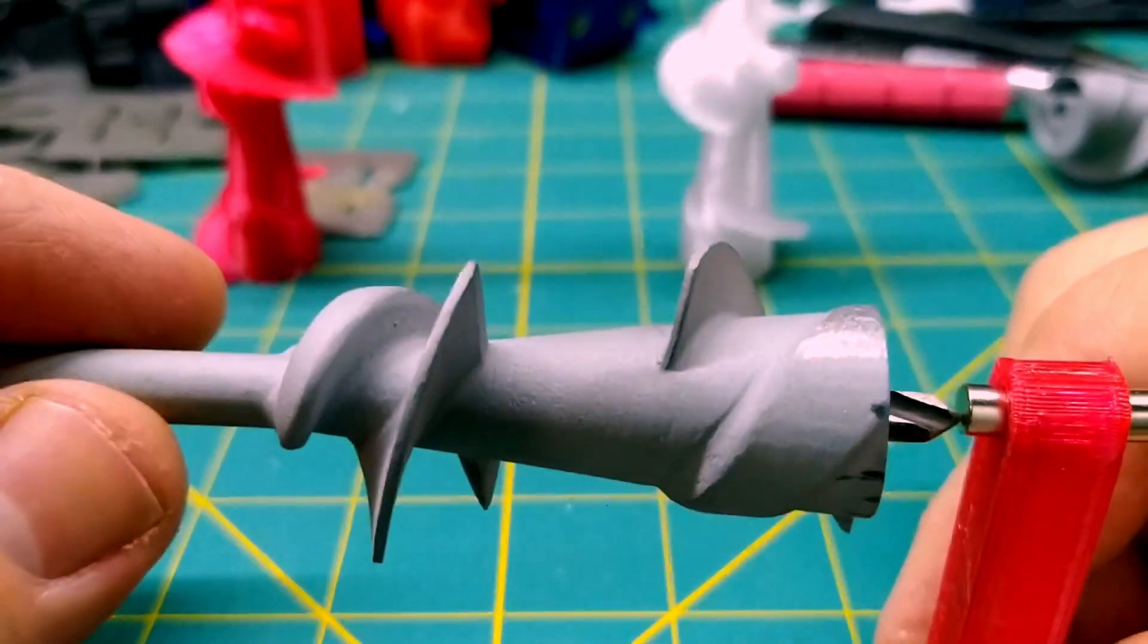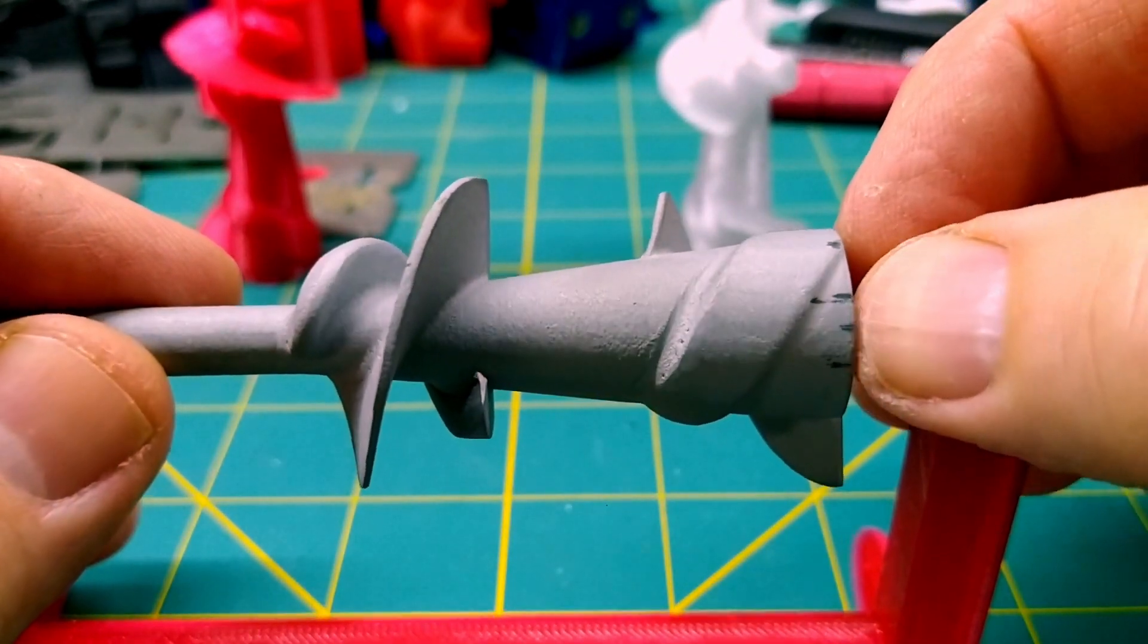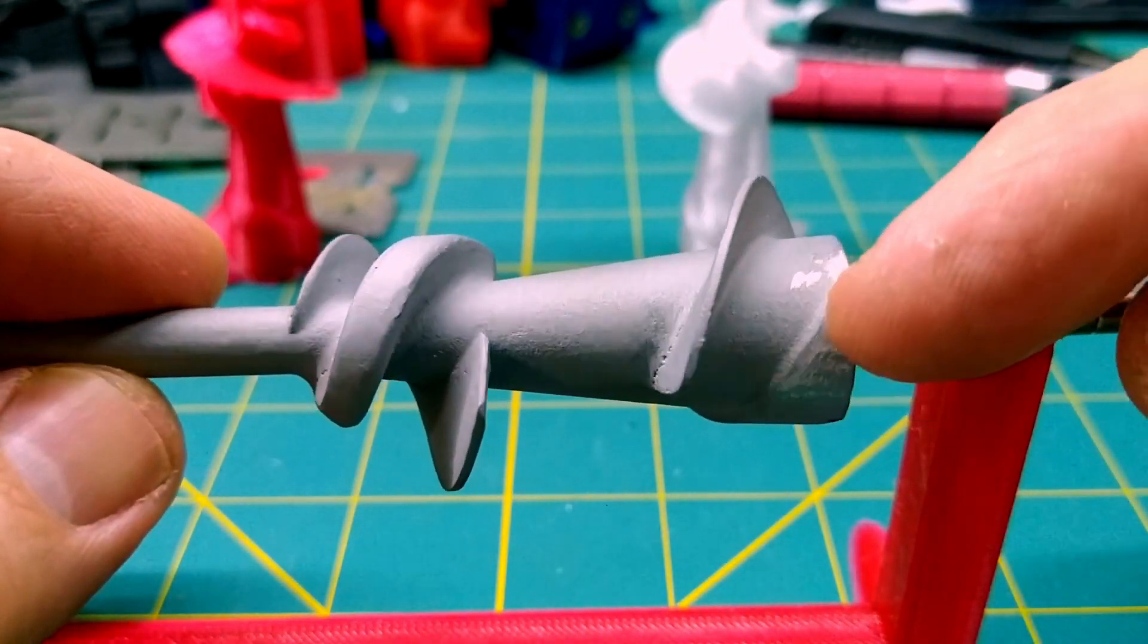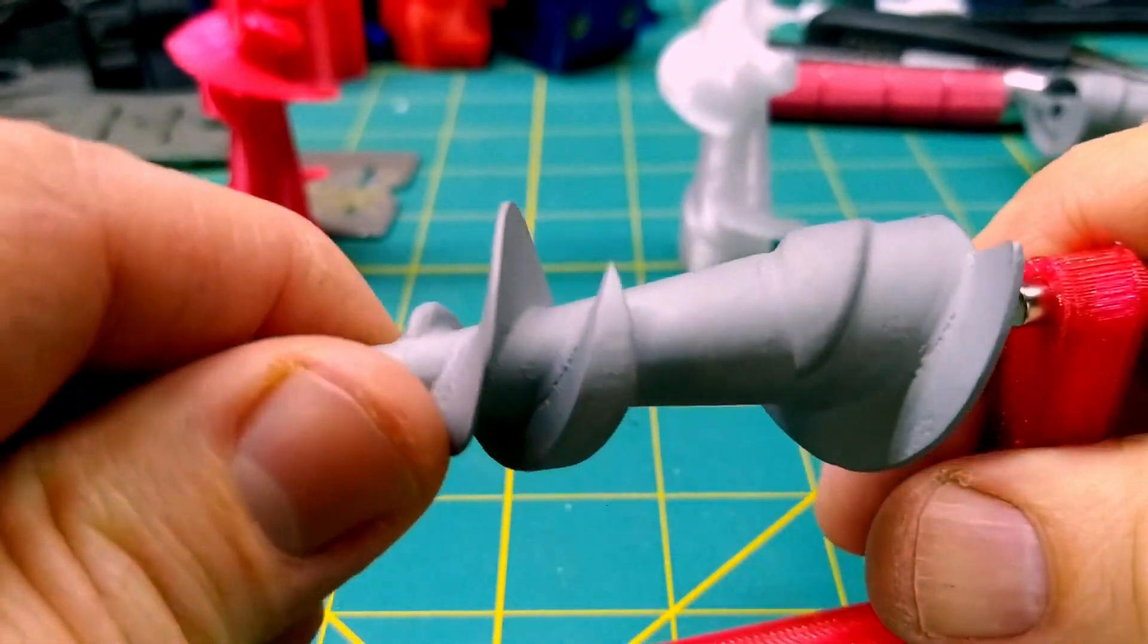See how it's kind of stopping nice? Now I did already test this one and this is the high spot, this is where it was landing every time, so I ground just a little bit off here and it evened it out pretty nicely.